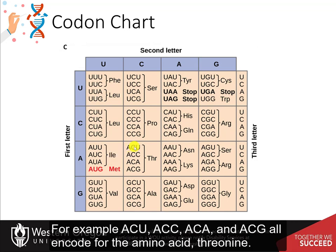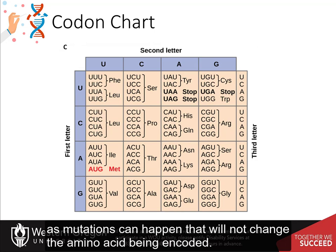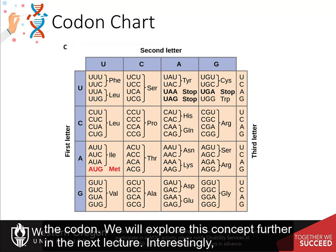For example, ACU, ACC, ACA, and ACG all encode for the amino acid threonine. Redundancy helps to minimize the effects of mutations in the DNA, as mutations can happen that will not change the amino acid being encoded. Redundancy is caused by degeneracy within the code, especially at the wobble position of the codon.